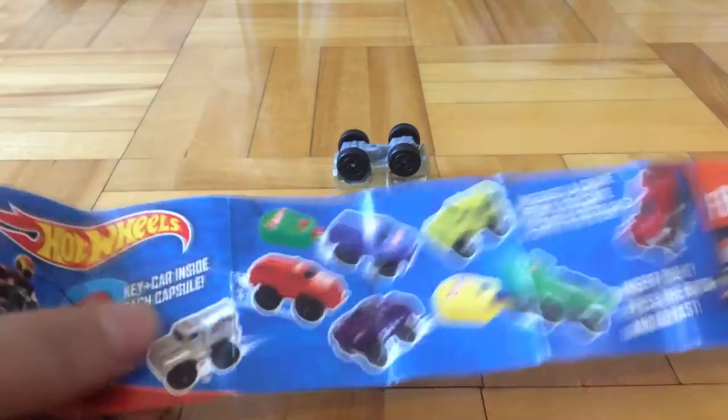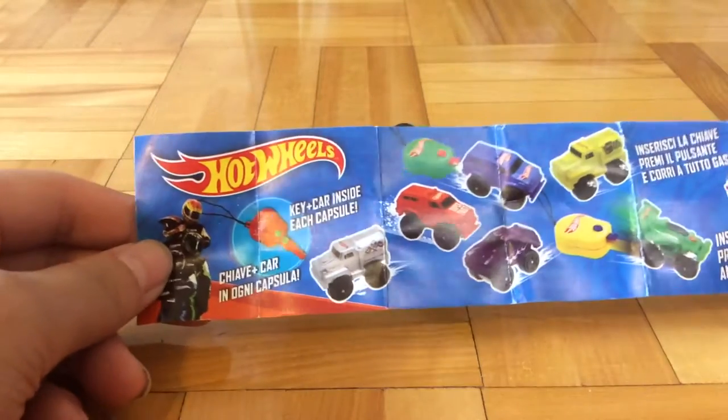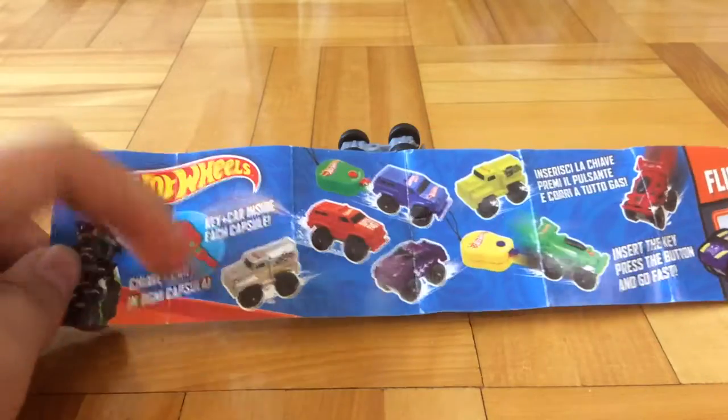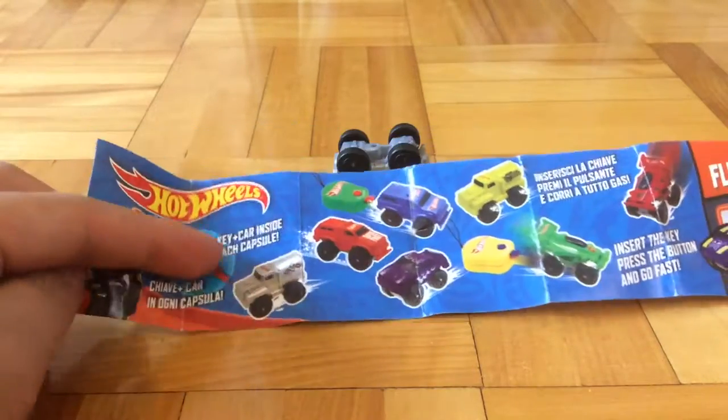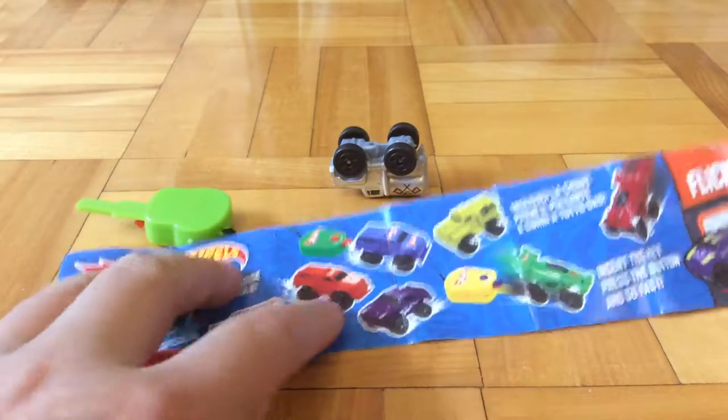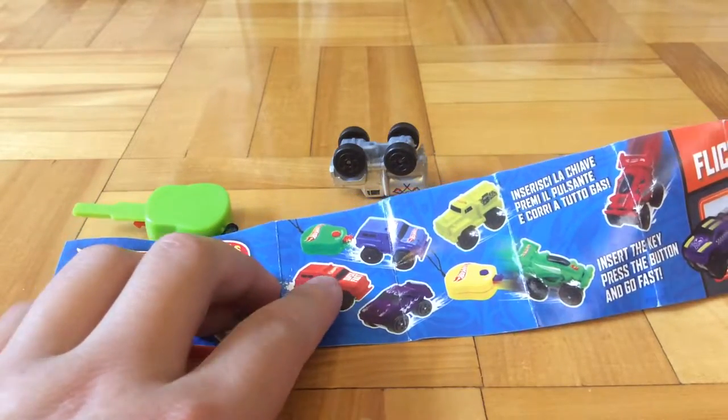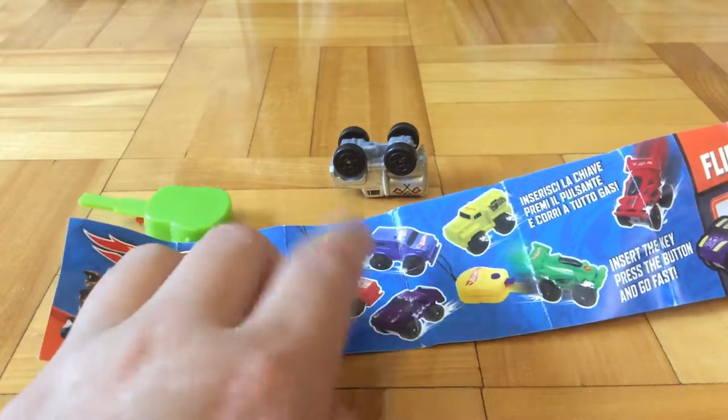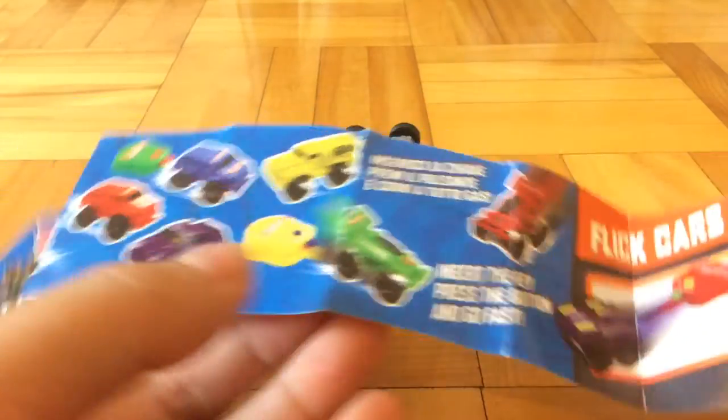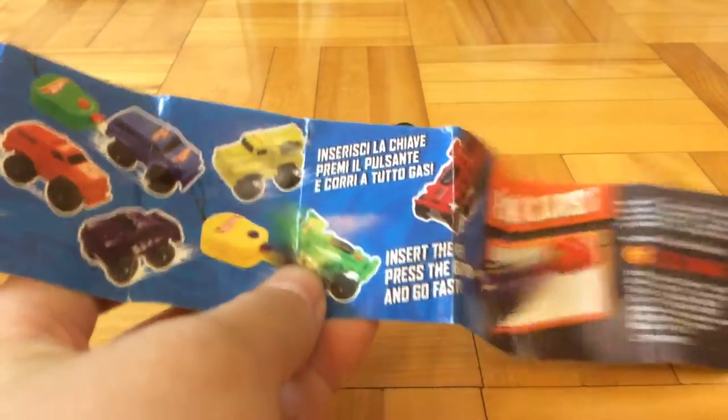Let's take a look at our little sheet right here. Hot Wheels key plus car cap inside each capsule. I chose the cars. There's a fuel truck, a truck with some light bar, and then there's another truck. This is what appears to be a car, and this looks like a Formula One car.